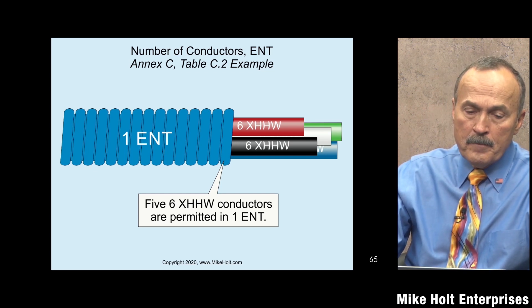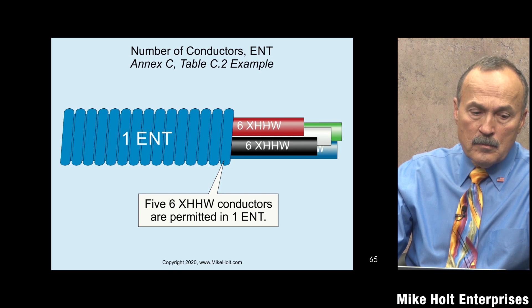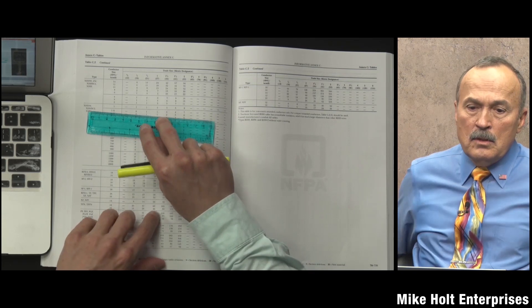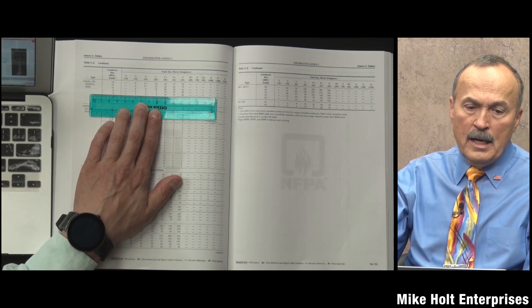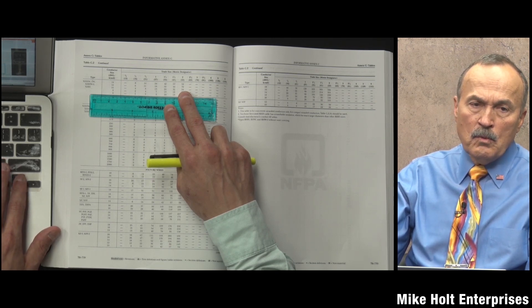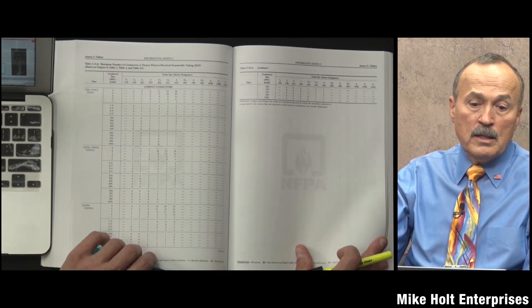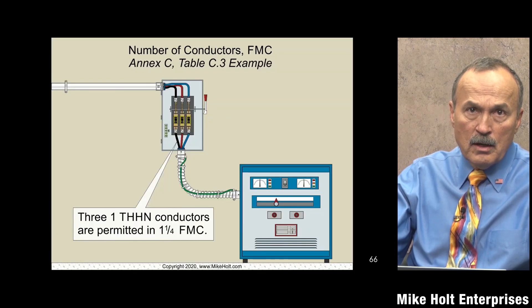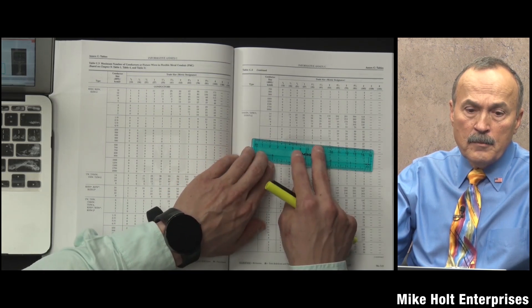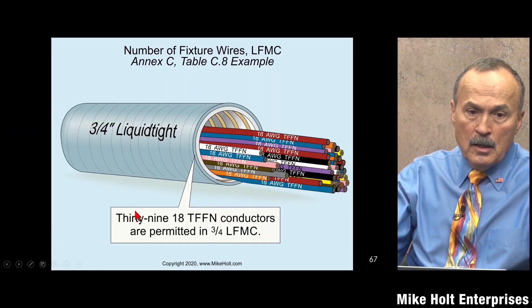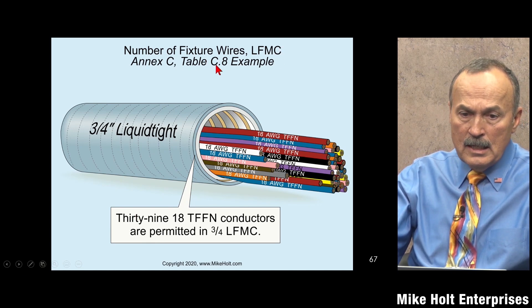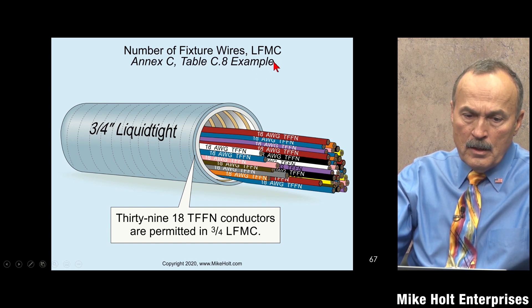Next: five #6 XHHW conductors - can they fit in a 1-inch ENT? For ENT you have to go to the ENT table, look up XHHW, and with five of them a 1-inch ENT is the right size. Then: three #1 gauge THHN conductors - looking at flex metal conduit, going to the 1.25-inch table, three #1 gauge wires fit - so that's correct.